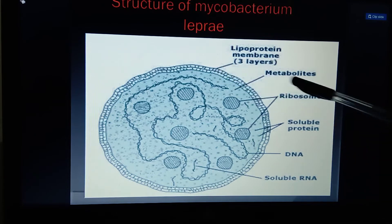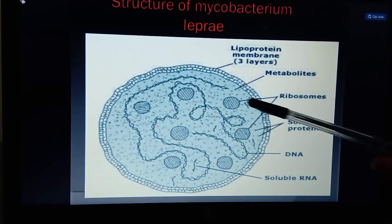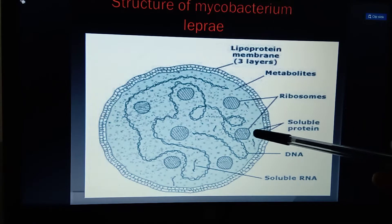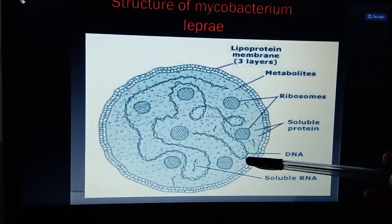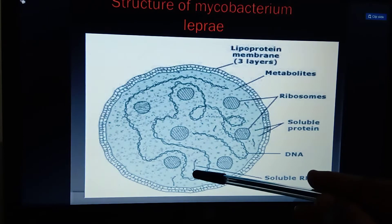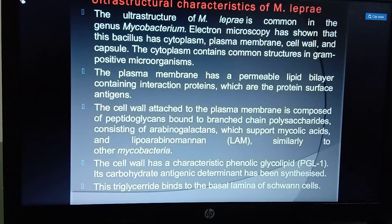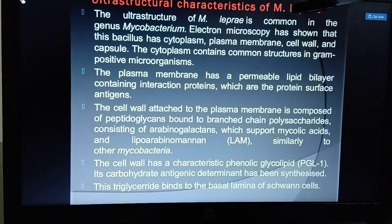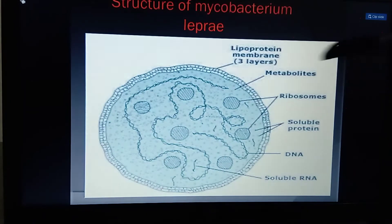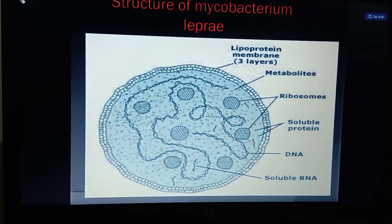The structure of Mycobacterium leprae shows three lipoprotein membrane layers, along with metabolites, ribosomes, soluble proteins, DNA, and soluble RNA. These structures are differentiated under electron microscopy. The cytoplasm, plasma membrane, cell wall, capsule, lipid bilayers, and ultra-structural characteristics of Mycobacterium leprae have all been identified and documented.